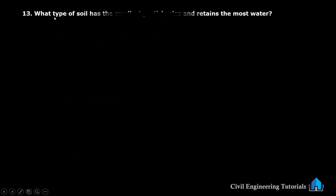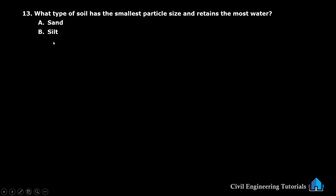Thirteenth question: what type of soil has the smallest particle size and retains the most water? Option A: sand. Option B: silt. Option C: clay. Option D: gravel. The answer is Option C: clay.